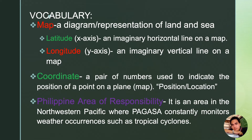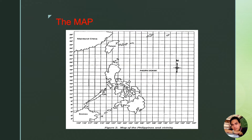Philippine Area of Responsibility, or PAR, is an imaginary area in the Northwestern Pacific where Pagasa constantly monitors weather occurrences such as tropical cyclones. We have here a map — the map of the Philippines. This map shows the islands of the Philippines, including its neighboring territories and bodies of water surrounding the archipelago. The map also shows the imaginary lines, which are the latitudes and longitudes.